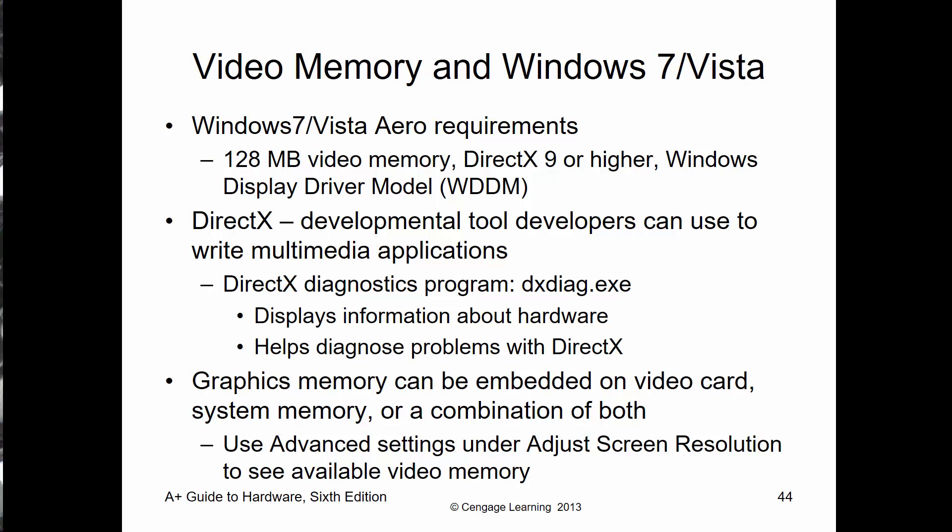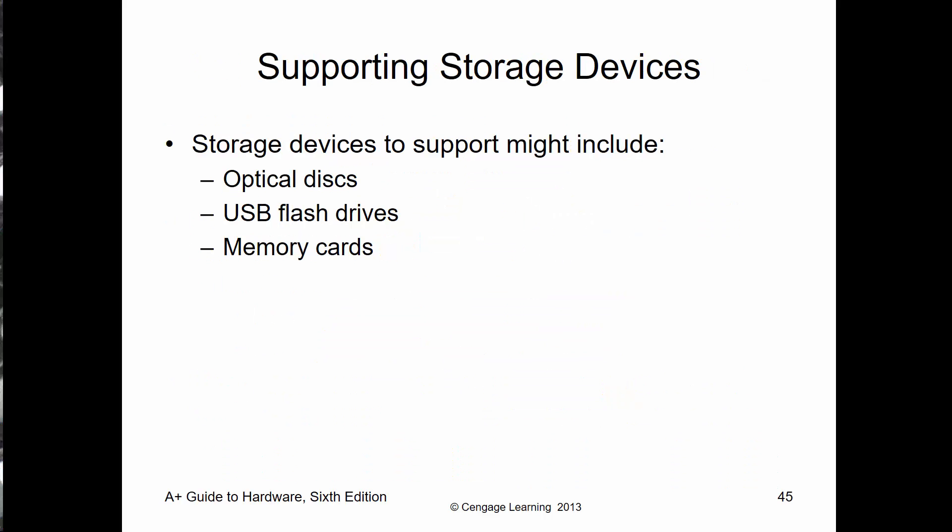Storage normally falls into three categories: mass storage or long-term storage, optical storage, or solid-state storage. This also includes things like optical disks, flash drives, and memory cards, all fitting within a specific storage type.